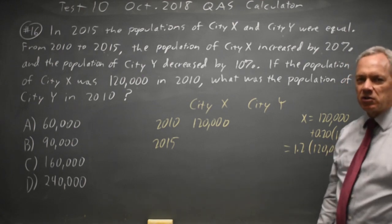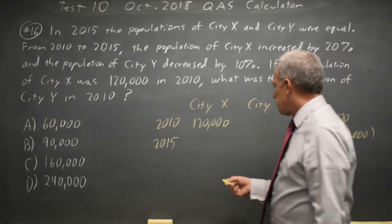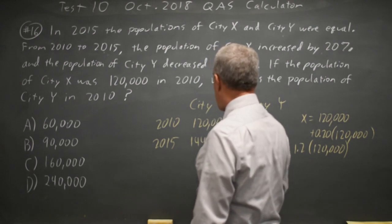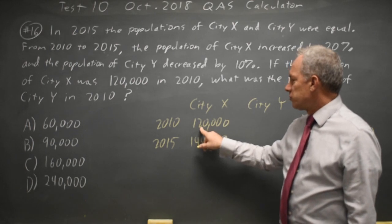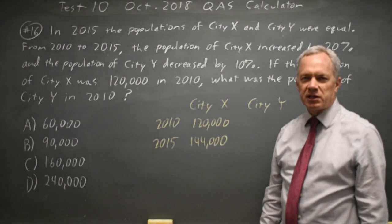You can also look at it as 20% will be 24,000, and 120,000 plus 24,000 is 144,000.